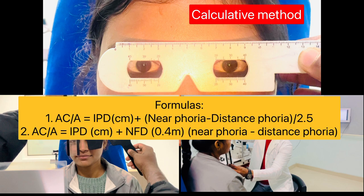For second formula also, we require IPD. And this IPD should be added to the difference of phoria from near to distance multiplied by near functional distance. The near functional distance should be in meters, and for 40 centimeters of the working distance, it is 0.4 meters.